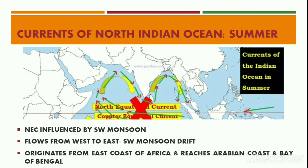It should be noted that there is no Counter Equatorial Current at this time of the year. Thus the circulation of water in the northern Indian Ocean during the summer season has a clockwise direction.